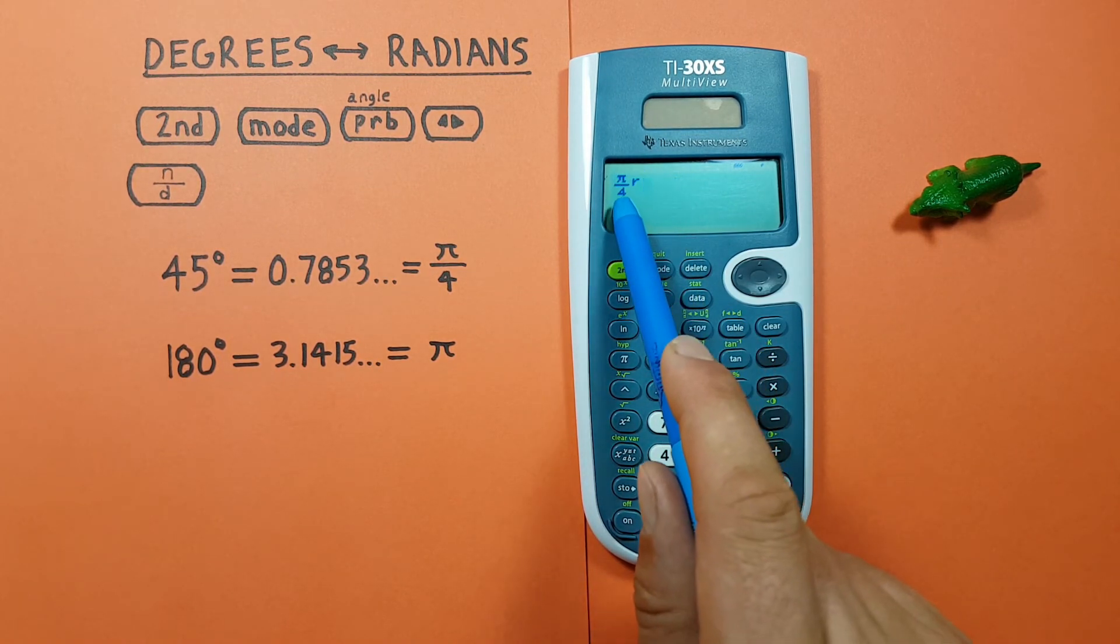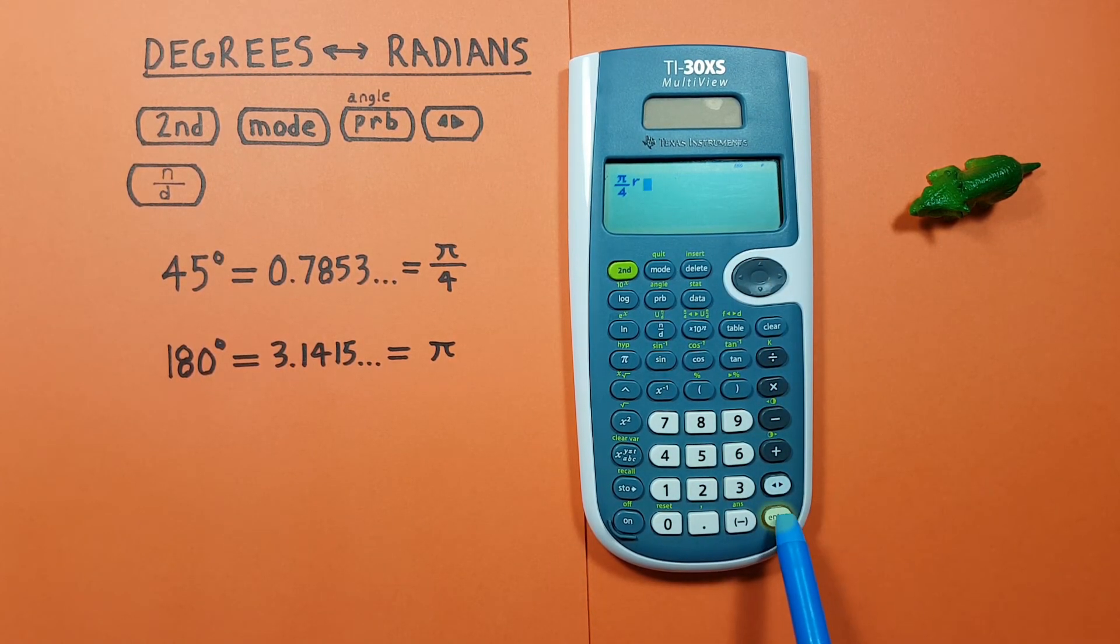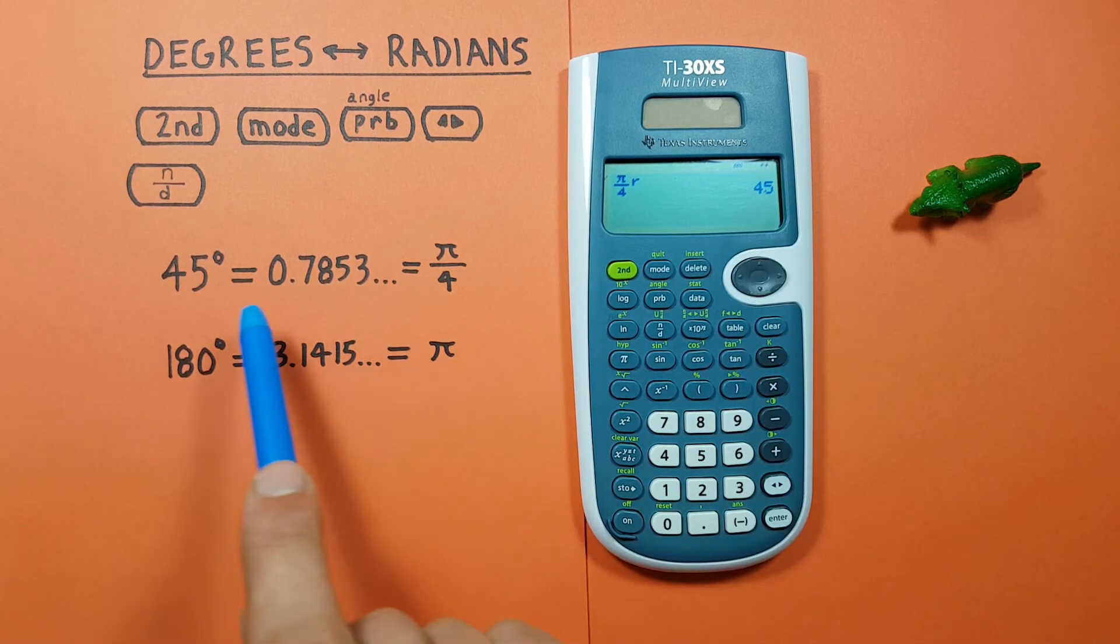And we have pi over 4 radians. In degree mode, press enter, and we see we get 45 degrees, which is correct.